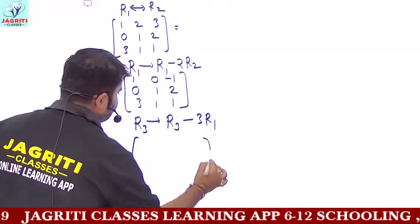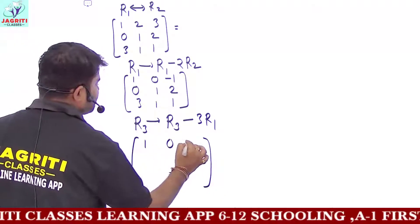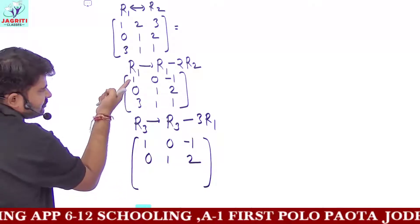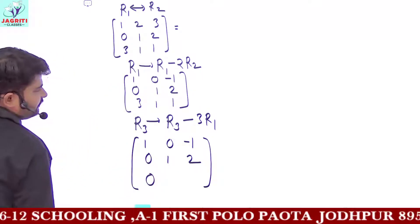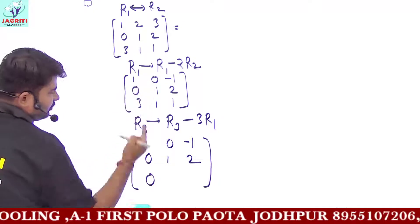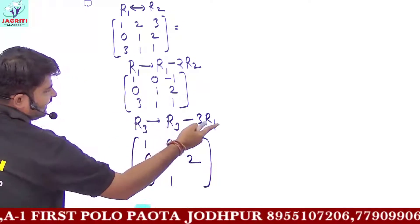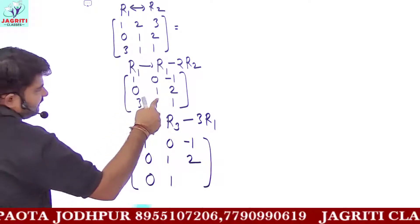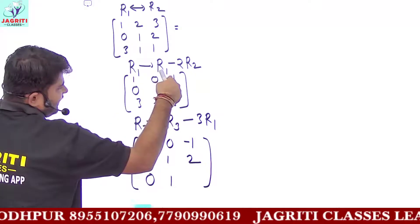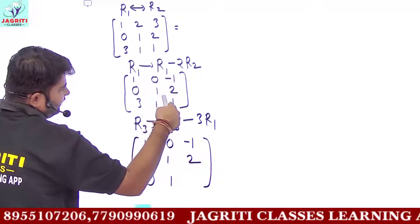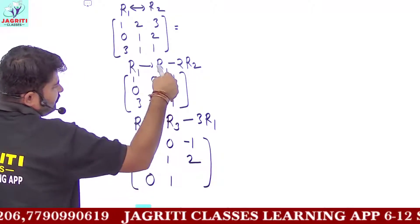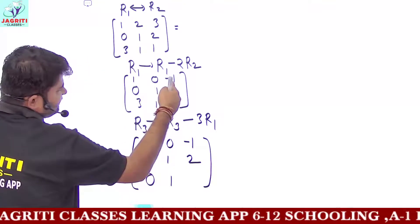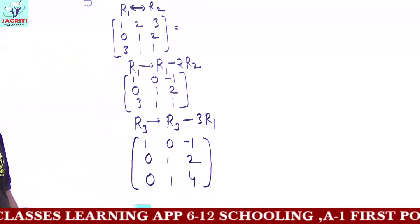R3 is being changed: 3 − 3×1 = 0, 1 − 0 = 1, and for the last element: 1 − 3×(−1) = 1 + 3 = 4. So R3 becomes [0, 1, 4]. The matrix is now [1, 0, −1; 0, 1, 2; 0, 1, 4].